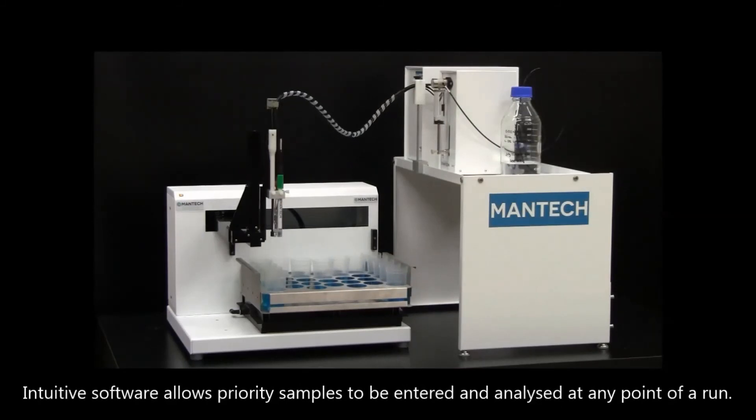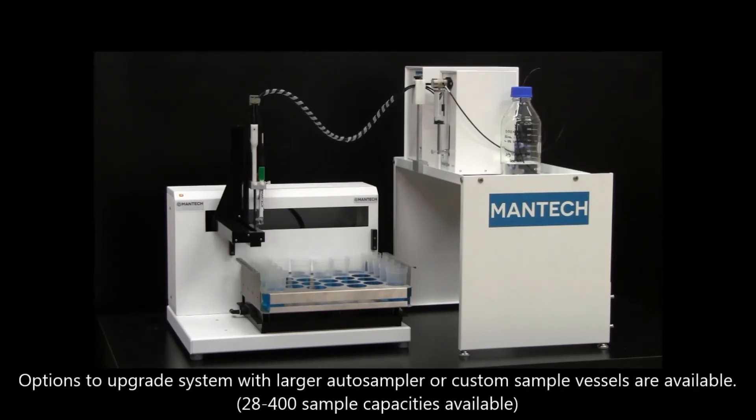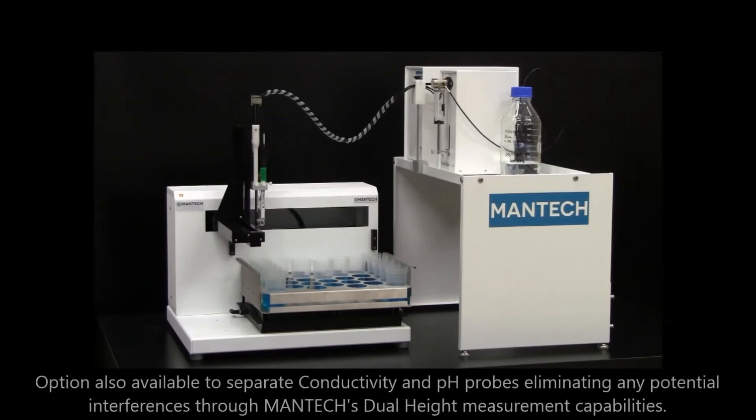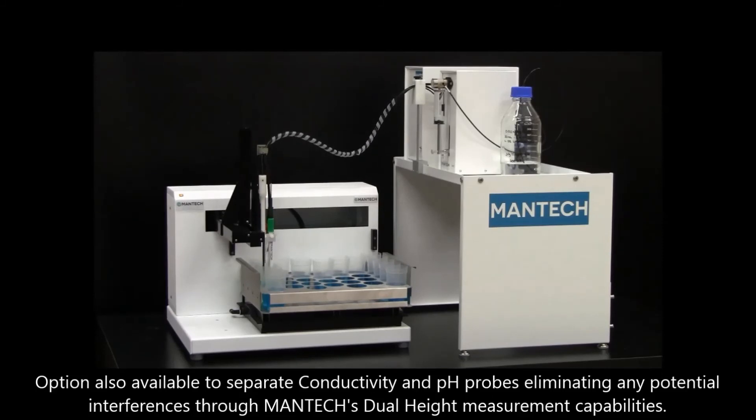Intuitive software allows for priority samples to be entered and analyzed at any point of a run. Options to upgrade the system with a larger autosampler or custom sample vessels are available. The option is also available to separate conductivity and pH probes, eliminating any potential interference.